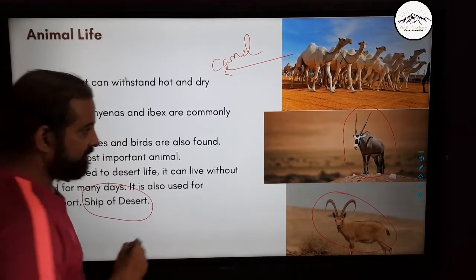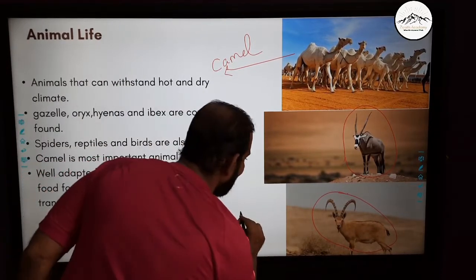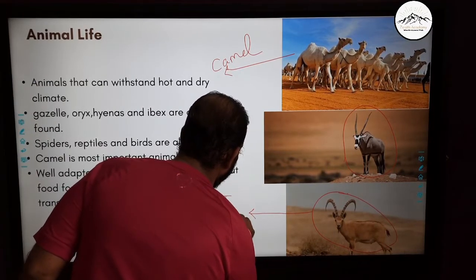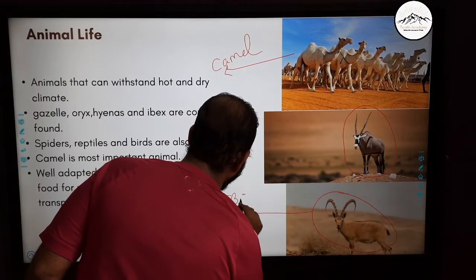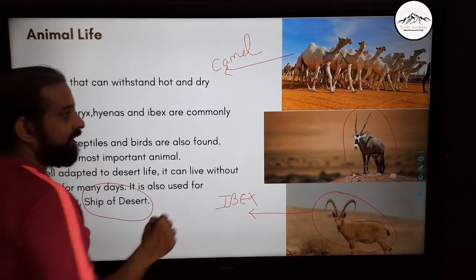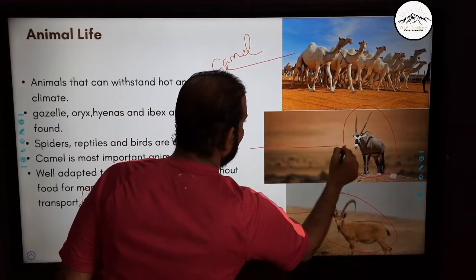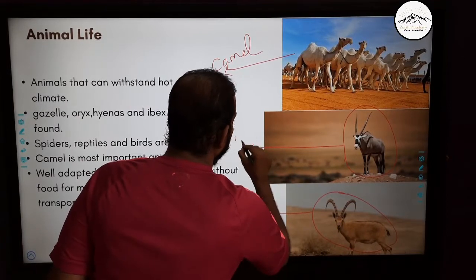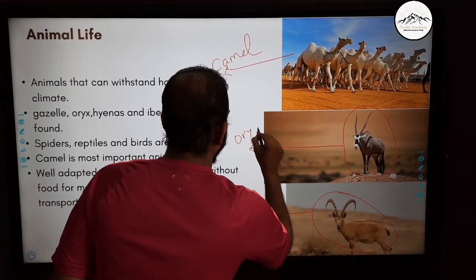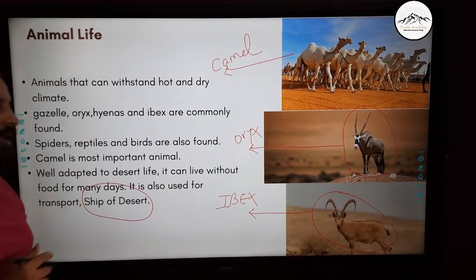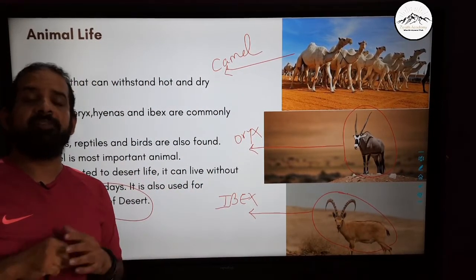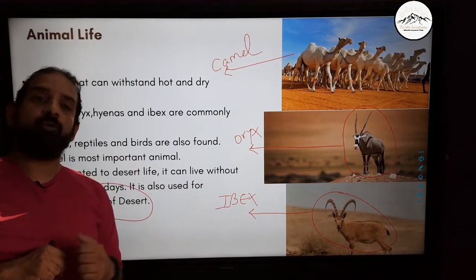Other than camels, you find ibex and oryx. So this is all about the animals found in Saudi Arabia.